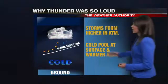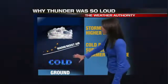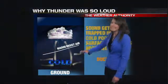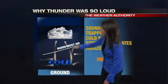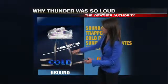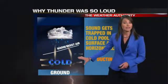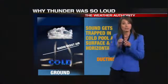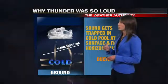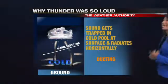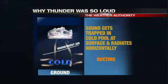We see that cold pool kind of soak in the thunder sound. So the lightning comes down and the thunder — the sound of it — gets trapped in that cold pool of air at the surface, and it kind of radiates horizontally. That's how you get that rolling sound. It's called ducting, and that's why the sound was so amplified the other night.